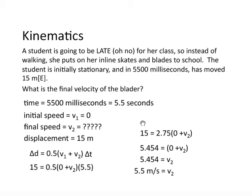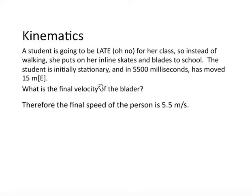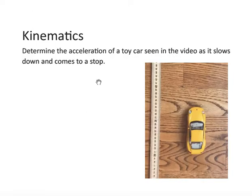That's very important. Assuming that they were always constantly accelerating. Is that even possible? Well, for a rollerblader, probably not. But that's the assumption we have to make. Of course, every problem needs a final statement, a conclusion. Therefore, the final speed of the person is 5.5 meters per second. Two significant digits because of the 5,500 milliseconds, which has two significant digits, and the 15 meters.